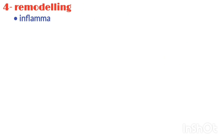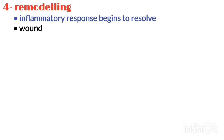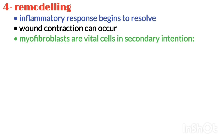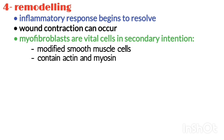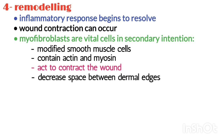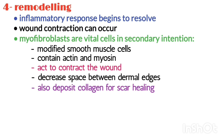Number four is remodeling. The inflammatory response begins to resolve and wound contraction can occur. Myofibroblasts are vital cells in secondary intention. They are modified smooth muscle cells that contain actin and myosin and act to contract the wound, decreasing the space between the dermal edges. They also can deposit collagen for scar healing.